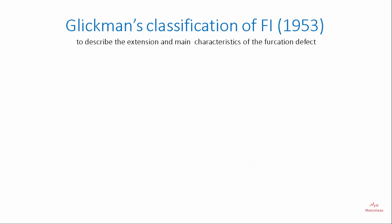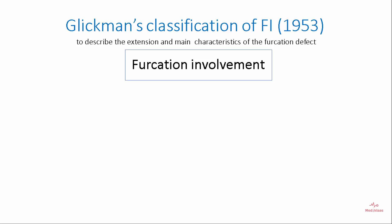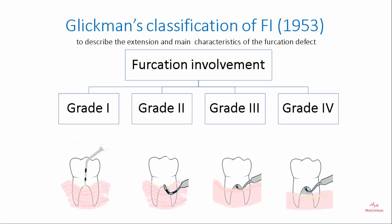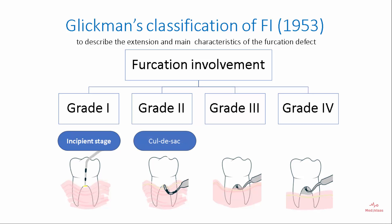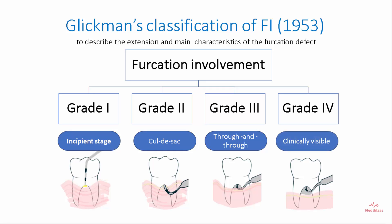Glickman's classification of furcation involvement is used to describe the extension and main characteristics of the furcation defect. It is divided into four grades: Grade 1, called the incipient stage; Grade 2, also called cul-de-sac; Grade 3, a through-and-through furcation; and Grade 4, through-and-through with clinically visible furcation.